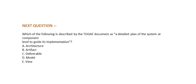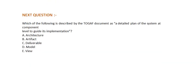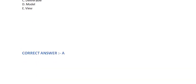Next question: Which of the following is described by the TOGAF document as a detailed plan of the system at component level to guide its implementation? Option A: Architecture. Option B: Artifact. Option C: Deliverable. Option D: Model. Option E: View. The correct answer is Option A.